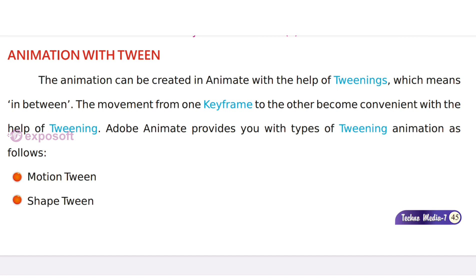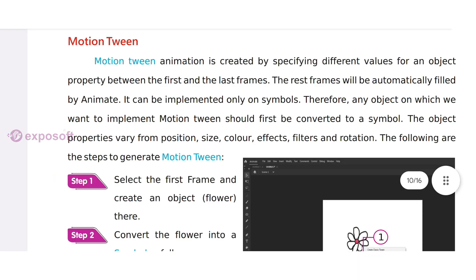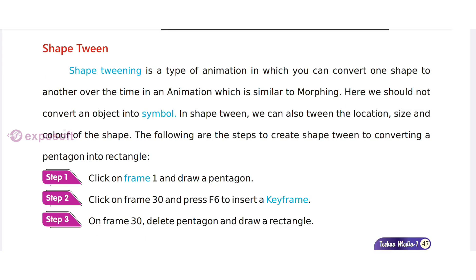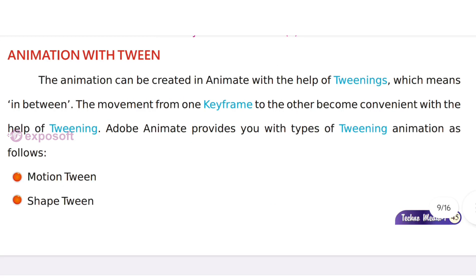Adobe Animate provides two types of tweening animation: motion tween and shape tween. Motion tween animation is created by specifying different values for an object's property between the first and last frames. Shape tweening is a type of animation in which you can convert one shape to another over time, similar to movie animation.